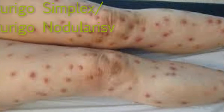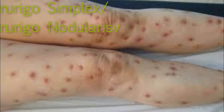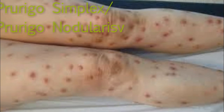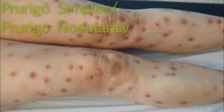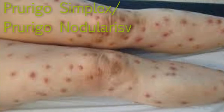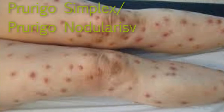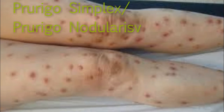Prurigo simplex has the appearance of a subacute dermatitis, with mild irregular acanthosis, spongiosis, spongiotic vesicles, perikeratosis, and a superficial perivascular chronic inflammatory infiltrate.